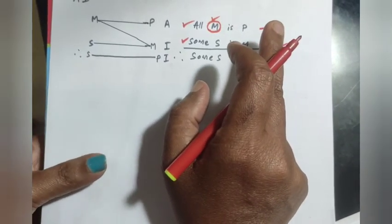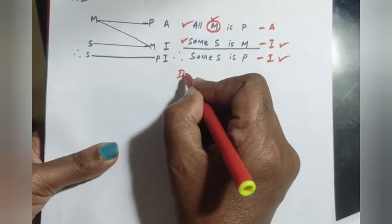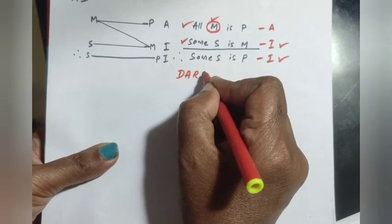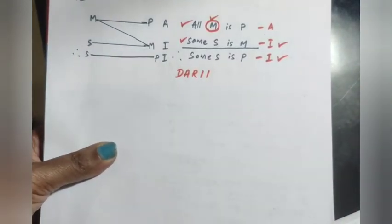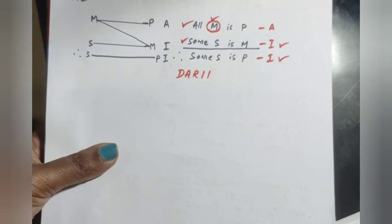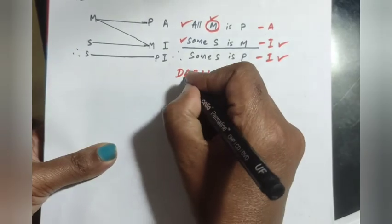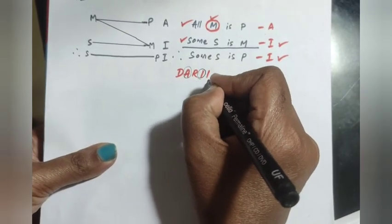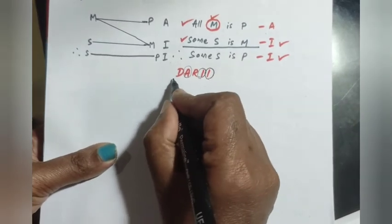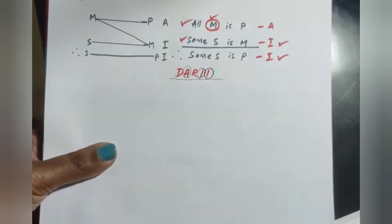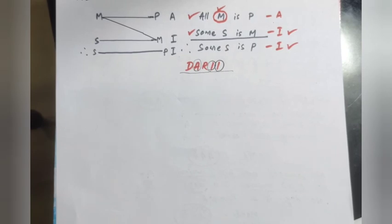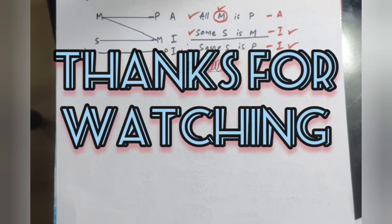This valid mode is called Darii — D-A-R-I-I. A for the major premise, A (or I) for the minor premise, and I for the conclusion. Like this, you work through all the valid modes of the first figure. In the next class I will continue with the valid modes of the other figures. Thank you.